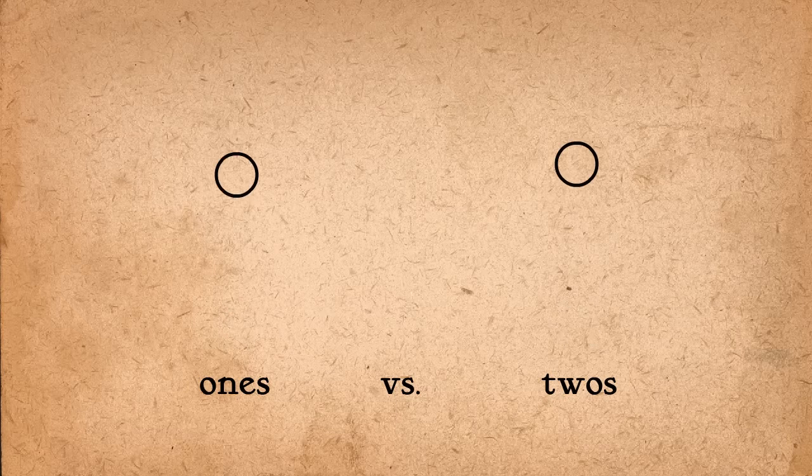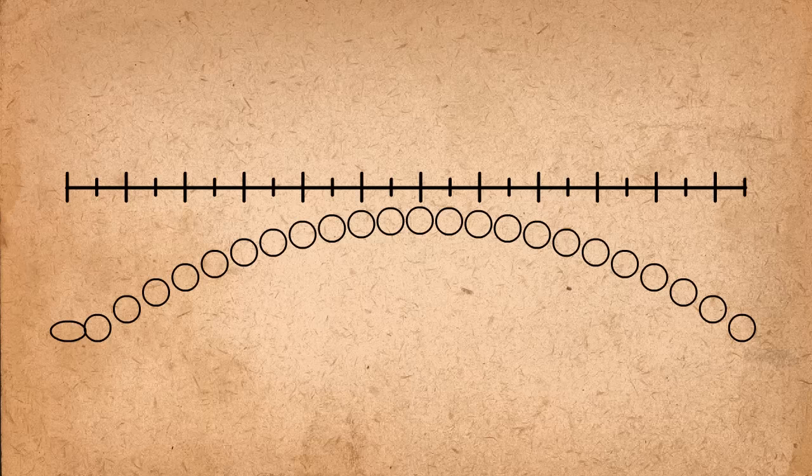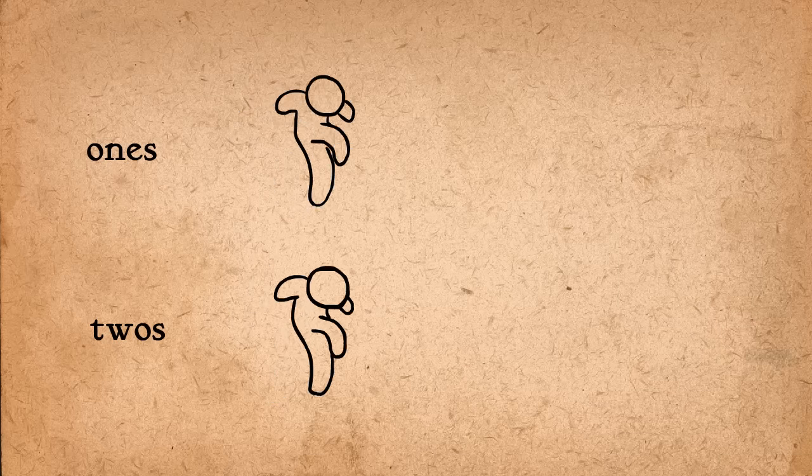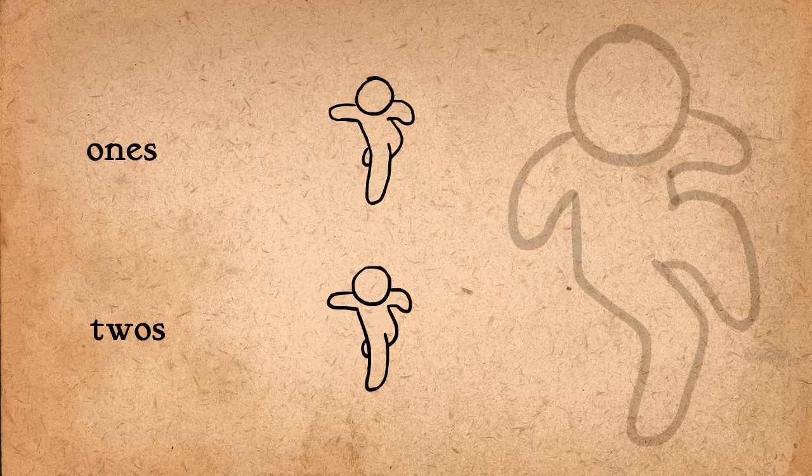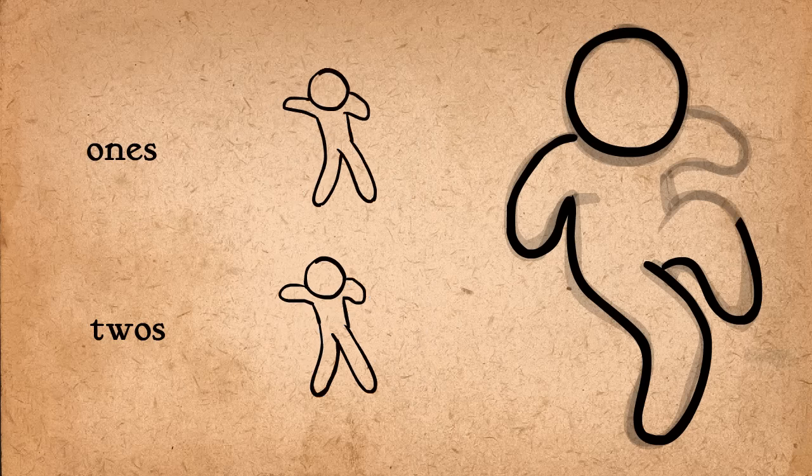It's actually very common to draw on twos rather than ones, for a few reasons. First, it cuts the amount of work in half. Second, it actually makes slow actions look smoother than if you were to draw every frame, because the precision needed to draw in between two very close drawings can lead to the animation looking jittery.